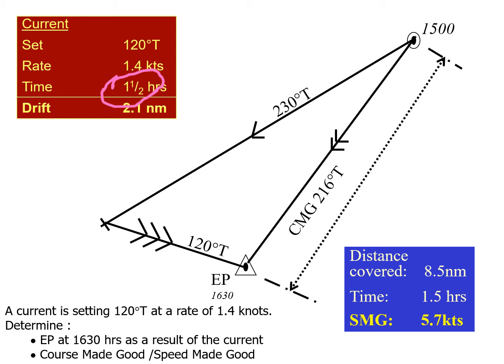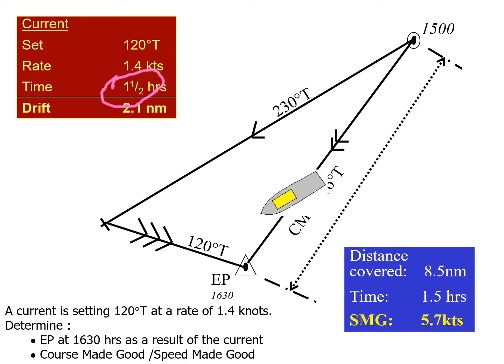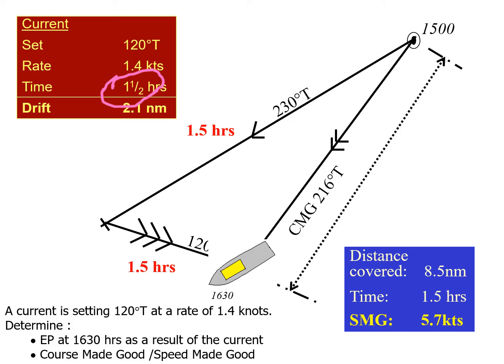This only takes into account the effect of current. The vessel did not proceed on its original intended course and did not reach the dead reckoning position — it reached the estimated position because it was affected by the current. Remember: the vector triangle is for one and a half hours. You can't draw one side for one hour and the others for one and a half hours. Everything must be drawn for the same time period — in this case one and a half hours.